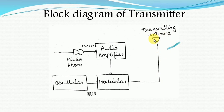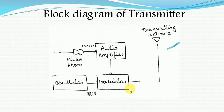The antenna specifications we are going to learn in EMWTL subject and also AWP subject. Now let us see what are the blocks involved in the transmitter section. The transmitter block consists of mainly a microphone, an audio amplifier, an oscillator, and a modulator. Now what is the purpose of each block, let us see.